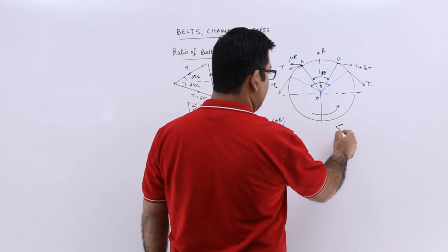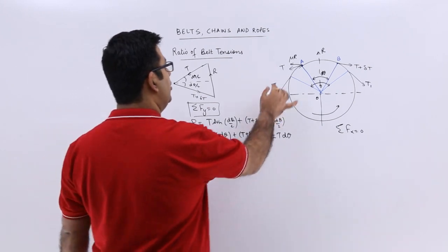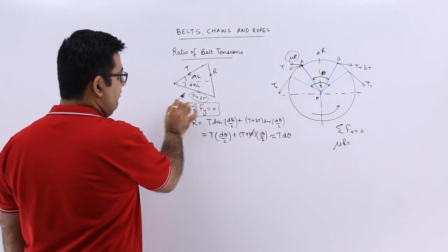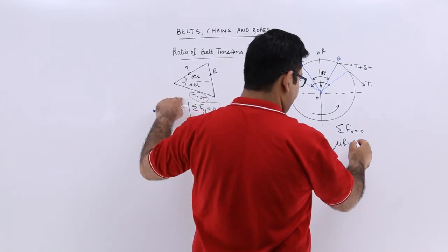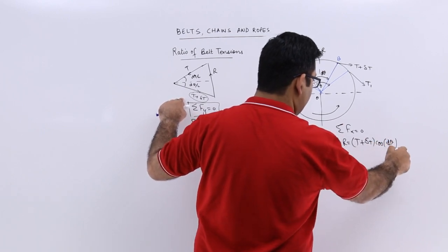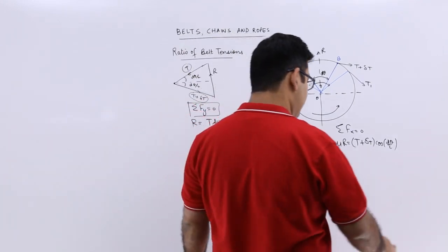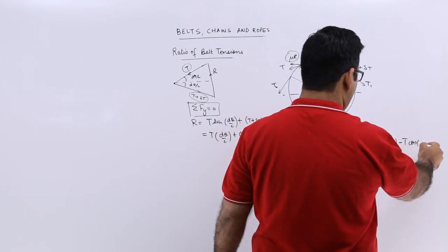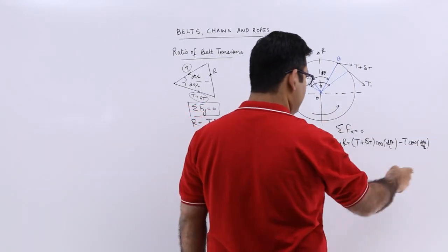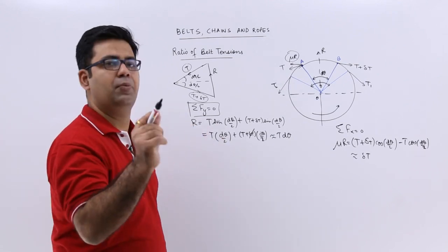Now we consider the equilibrium of the horizontal forces. μR is the horizontal frictional force, and this equals the horizontal component of T + δT minus the horizontal component of T. That gives (T + δT)·cos(dθ/2) − T·cos(dθ/2). When you resolve this, since cos of a very small angle is almost equal to 1, you get μR = δT.